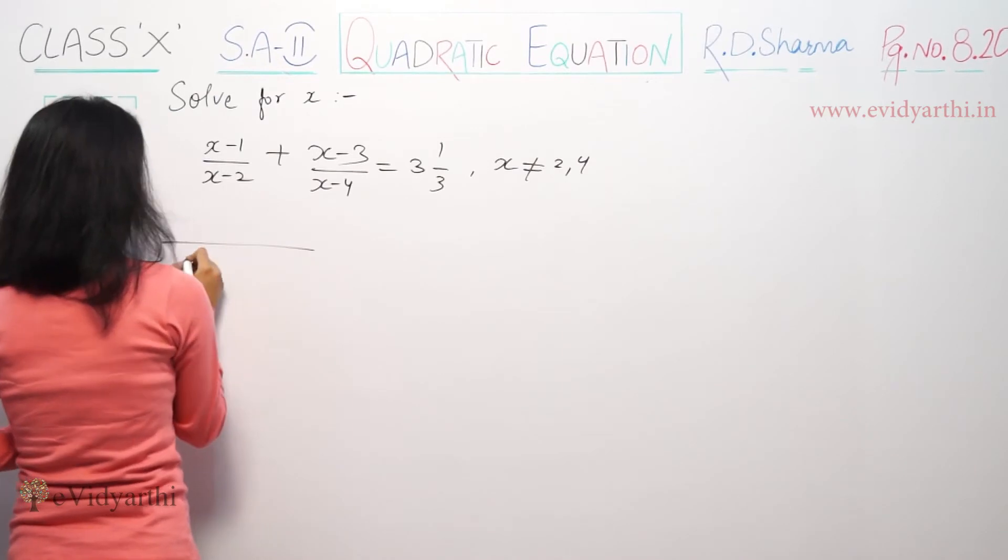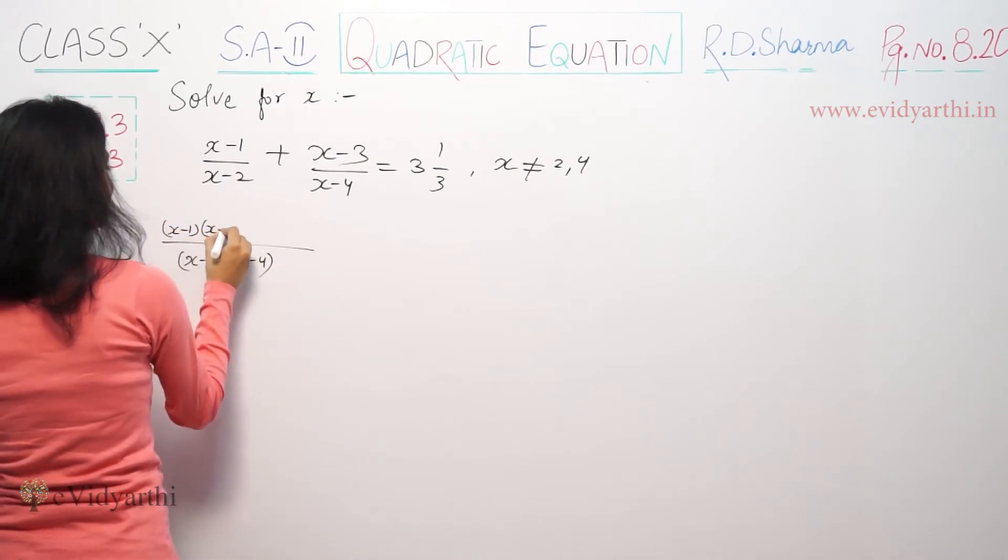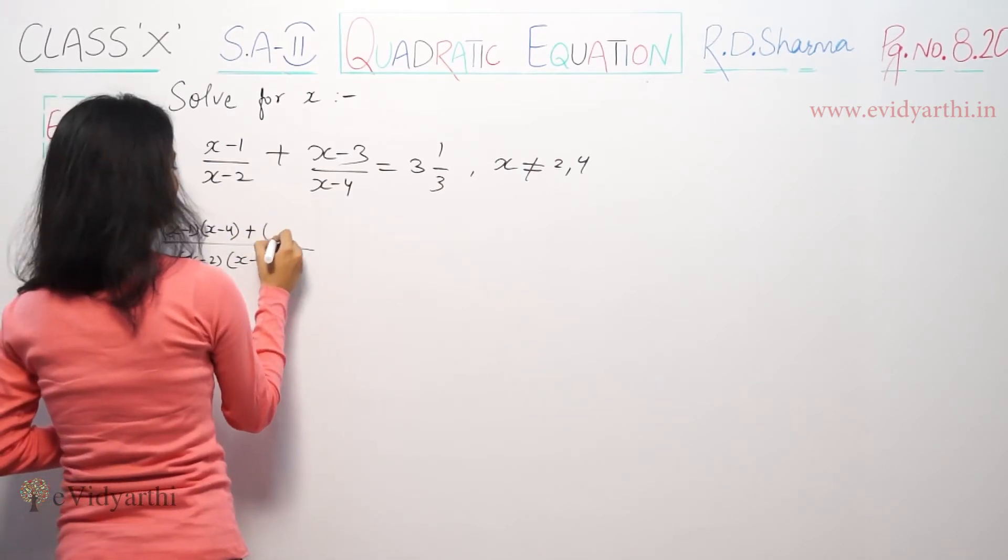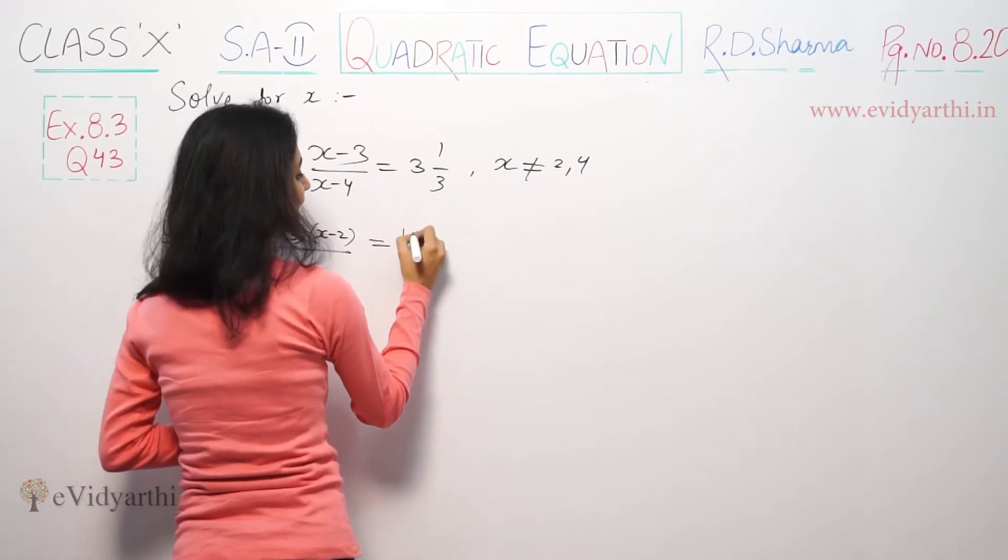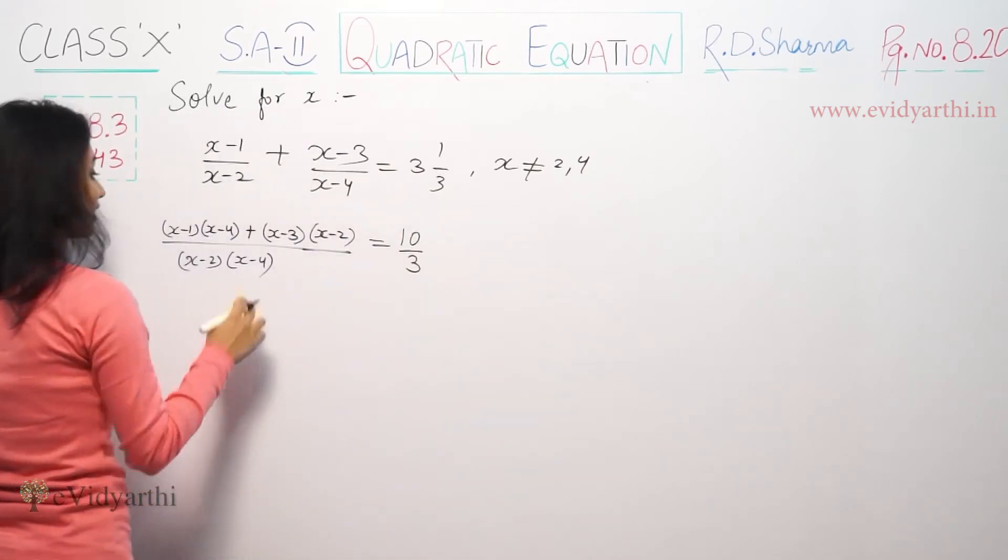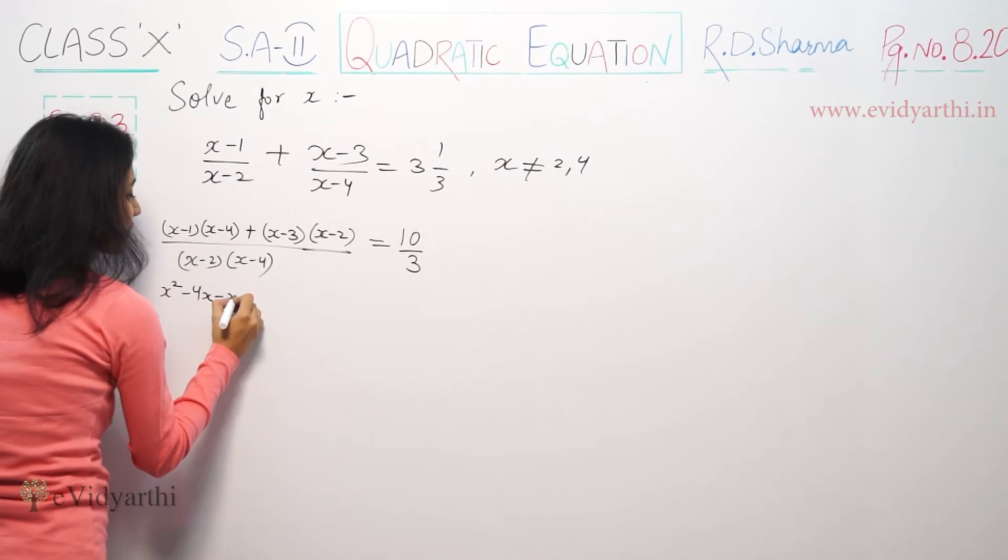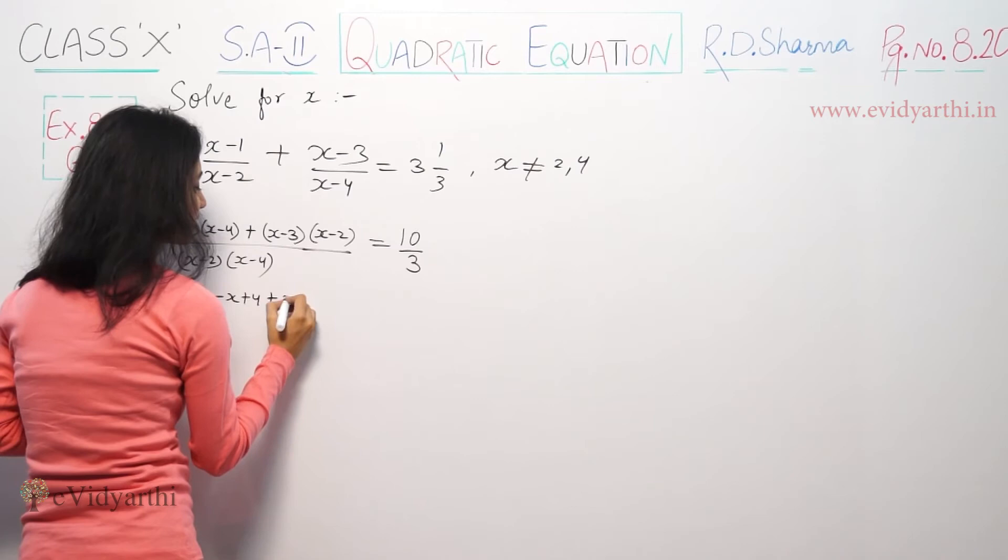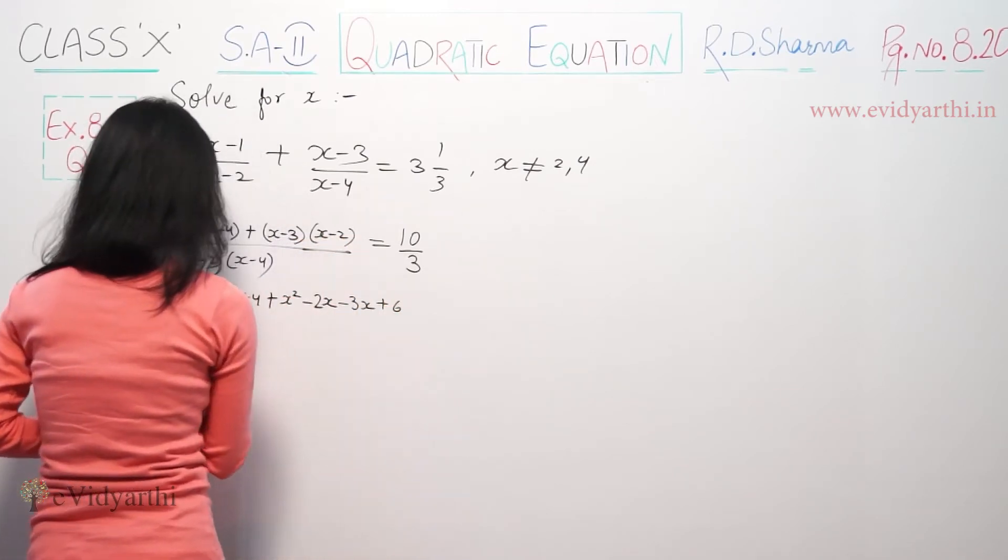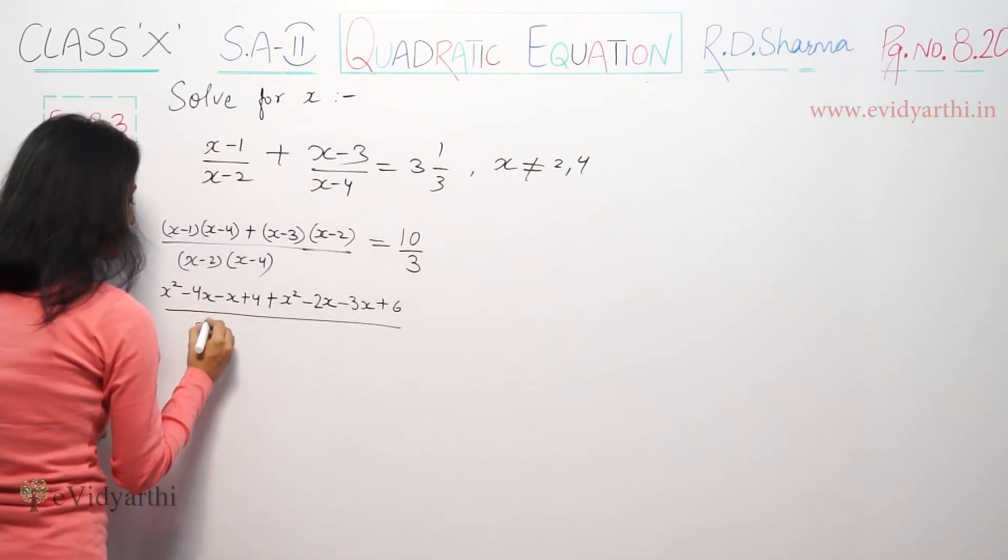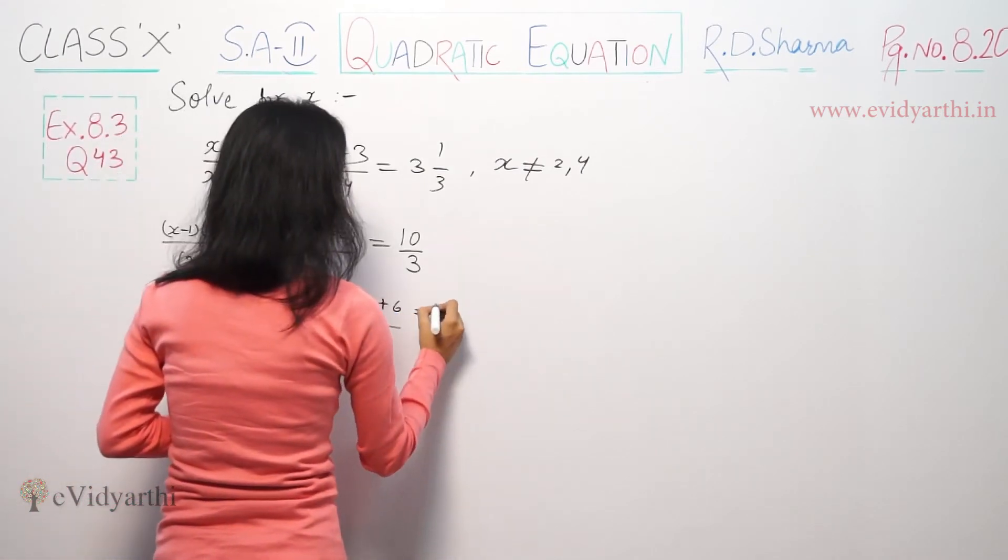So we write (x-1)/(x-2) + (x-3)/(x-4). Converting to proper fraction: 10/3. We multiply: (x² - 4x - x + 4)/(x-2)(x-4) + (x² - 2x - 3x + 6)/(x-2)(x-4) = 10/3. So (x² - 5x + 4)/(x² - 6x + 8) + (x² - 5x + 6)/(x² - 6x + 8) = 10/3.